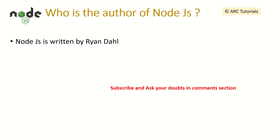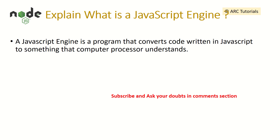Who is the author of NodeJS? NodeJS is written by Ryan Dahl. Next: explain what is a JavaScript engine. A JavaScript engine is a program that converts code written in JavaScript to something that the computer processor understands. The code we write in JavaScript gets converted into a lower-level, system-level language, which then gets converted into binary — and that's how it can operate.